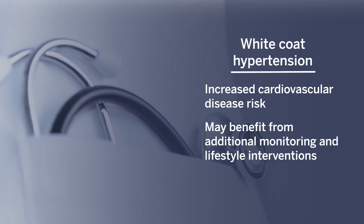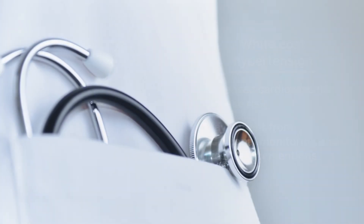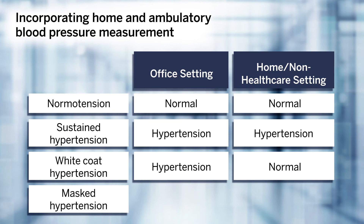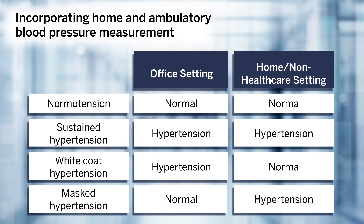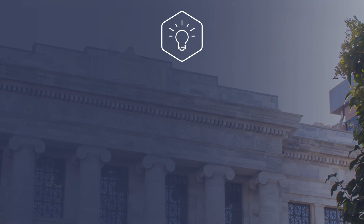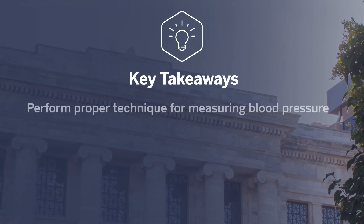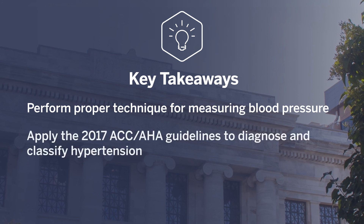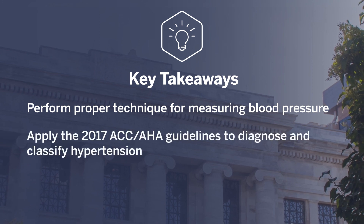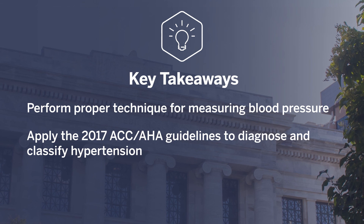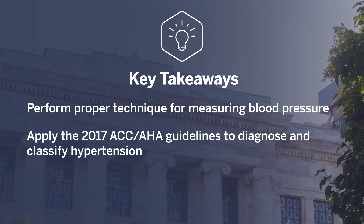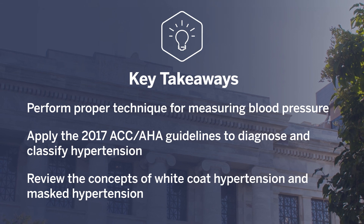White coat hypertension is a population not to be ignored — they may benefit from additional monitoring or lifestyle interventions. We'll talk more about the management of elevated blood pressure in another section. Finally, masked hypertension refers to a situation where a patient has normal blood pressures measured in the office but true hypertension outside the office. This condition is associated with the same excess risk of cardiovascular disease as sustained hypertension and merits treatment. In summary, in this video we learned how to perform proper technique for measuring blood pressure, how to apply the 2017 ACC/AHA guidelines to correctly diagnose and classify degree of hypertension, and reviewed the concepts of white coat hypertension and masked hypertension.